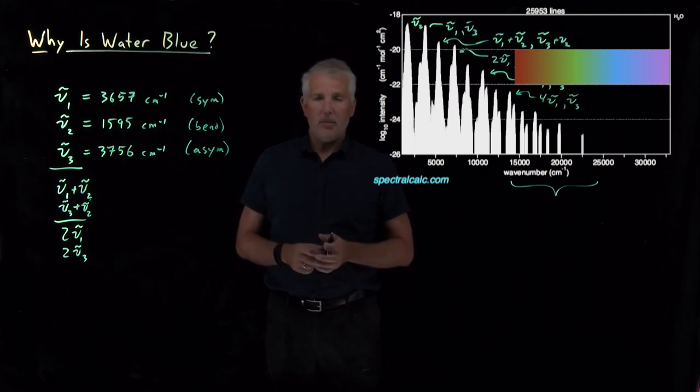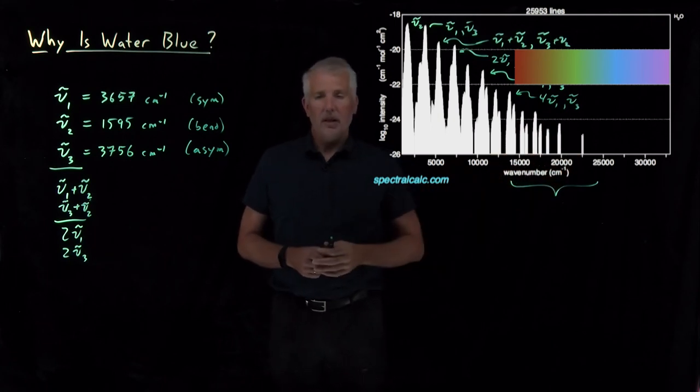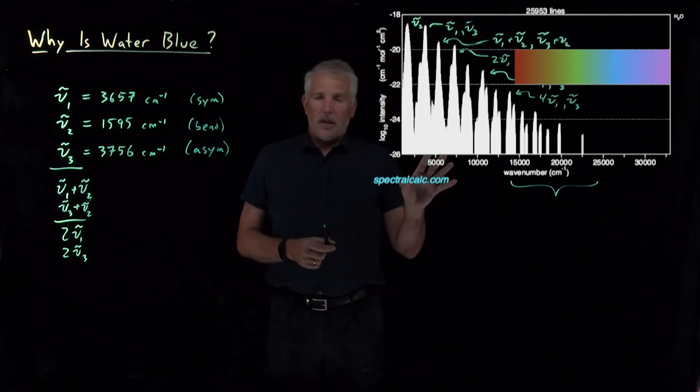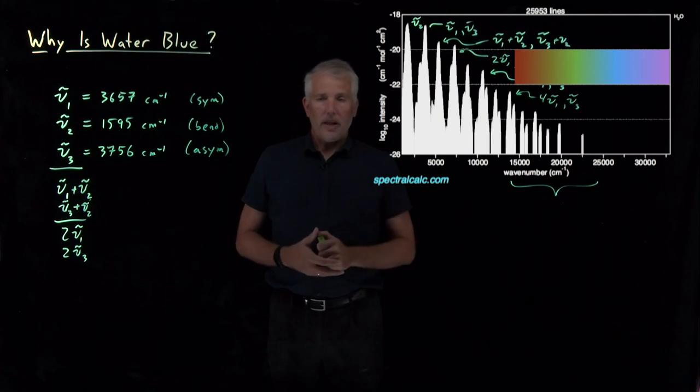That non-ideality, that anharmonicity, causes the overtones to weakly absorb in the red side of the visible spectrum. So, it turns out the spectroscopy of water is quite complex, but it gives rise to this perfectly ordinary, everyday phenomenon.